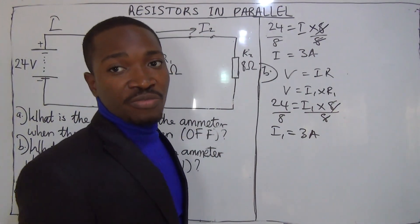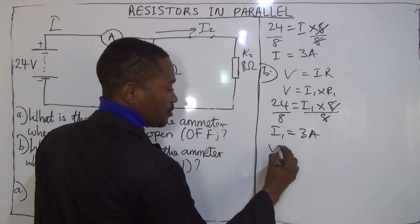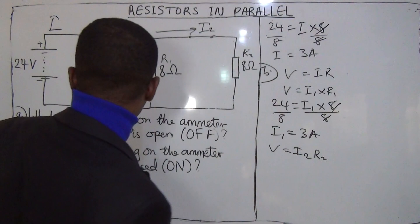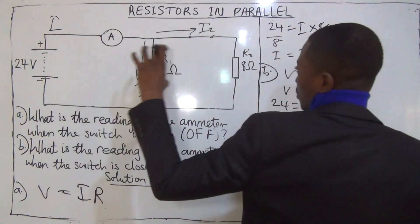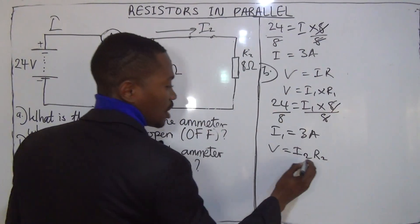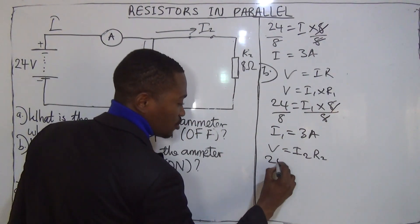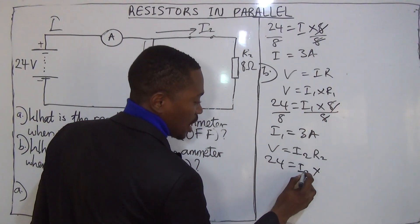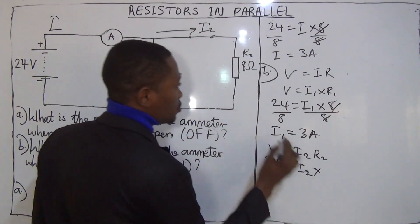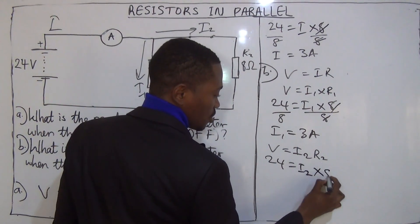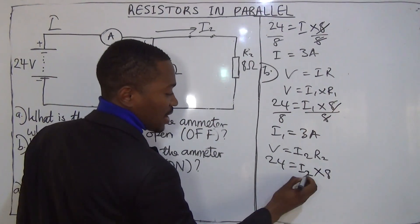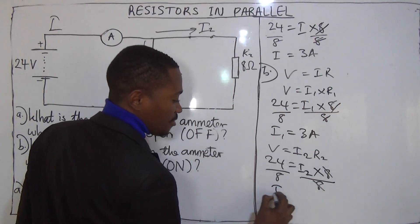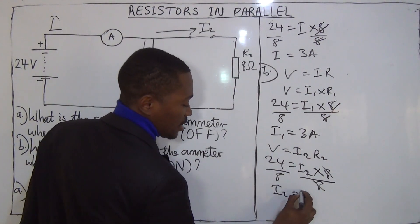We use the same formula to find I2. V equals I2 multiplied by R2. V is the same 24 volts — the voltage across R2 is also 24 volts. So 24 equals I2 multiplied by R2, which is 8 ohms. To find I2, divide both sides by 8: I2 equals 24 divided by 8, which is 3 amps.